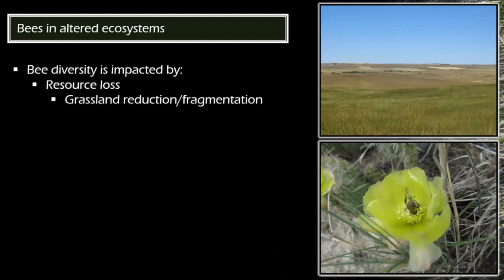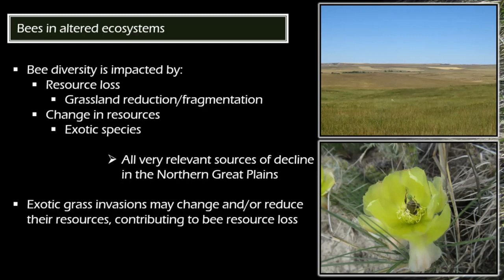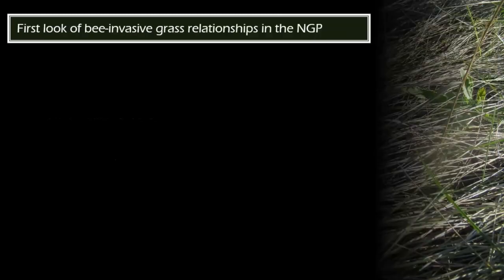It's important to maintain functional diversity on our landscapes, but bee diversity is affected by certain things: resource loss, general grassland reduction, fragmentation of grasslands, and the change of resources through exotic species. These are very common things in the northern Great Plains — we have lots of cropland and lots of exotic species. Because exotic grass invasions are expected to influence the plant community, I would expect them to contribute to bee resource loss. However, this question hasn't been really looked at.